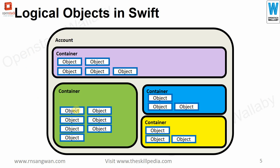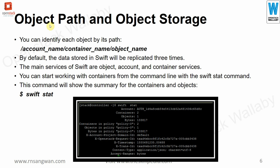At the top level we have an account. Inside that we create containers — in AWS they are called buckets, in OCI (Oracle Cloud Infrastructure) they are also called buckets, and in OpenStack we call them containers. Inside containers we put objects. Each object can be identified by its path: account name / container name / object name. By default, data stored in SWIFT is replicated three times, which is why we need at least three machines to create a proper object storage system.